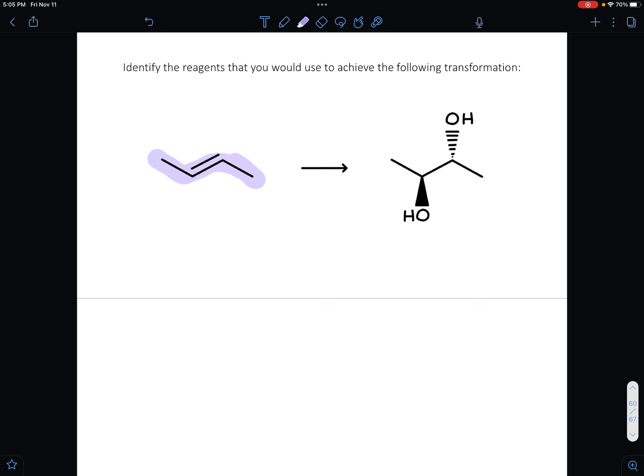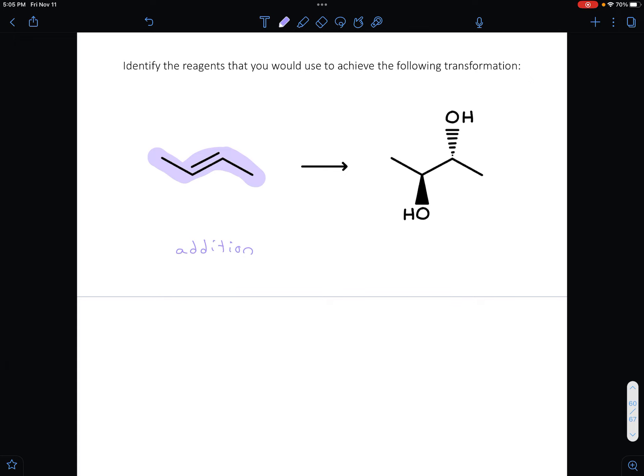Now, when you look at the starting material, one thing that should really stand out is the double bond. When you have those pi bonds, that's extra molecular glue that you can use to add things onto the molecule. So we'll be doing some type of addition reaction.